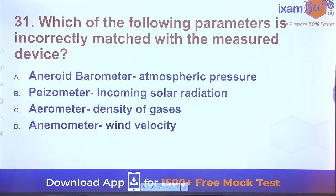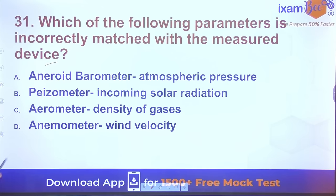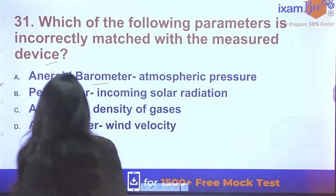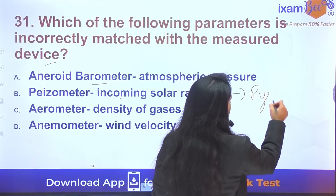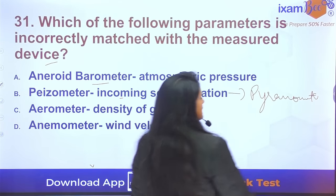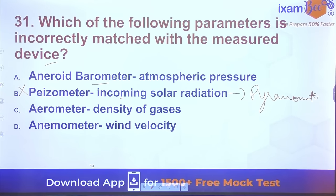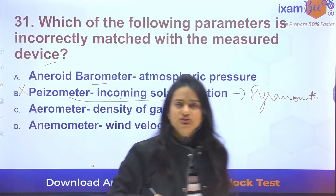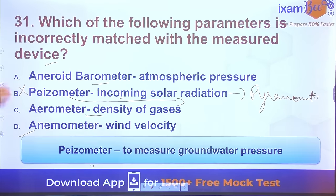Question 31: Which parameter is incorrectly matched with its measuring device? An aneroid barometer measures atmospheric pressure. A piezometer does NOT measure incoming solar radiation — that is measured by a pyranometer. A piezometer measures water table pressure. An anemometer measures wind velocity and an aerometer measures density of gases.